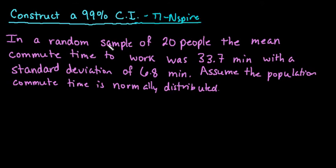So what we have here is a random sample of 20 people. The mean commute time to work was 33.7 minutes with a standard deviation of 6.8 minutes, and we are going to assume the population commute time is normally distributed.